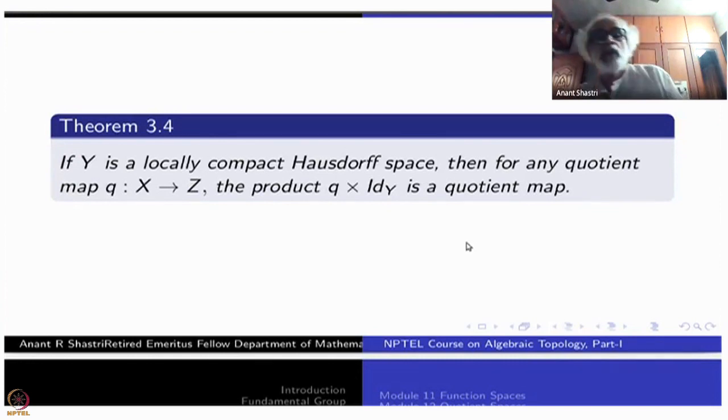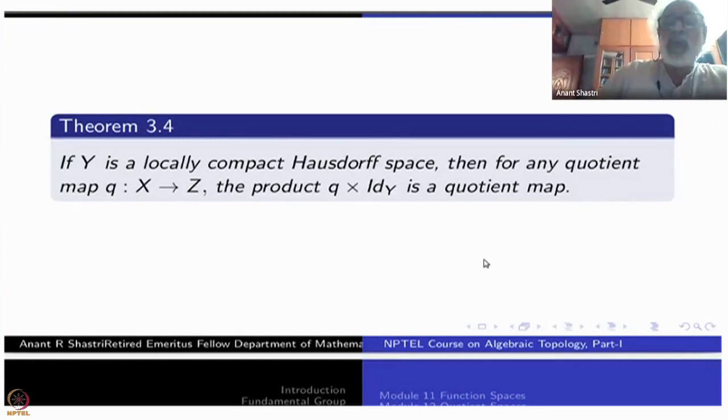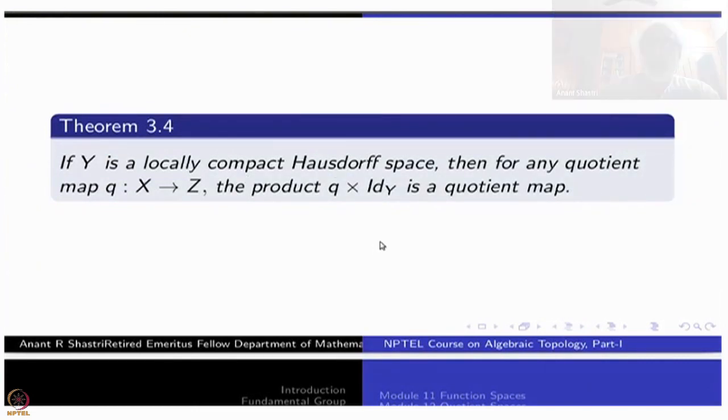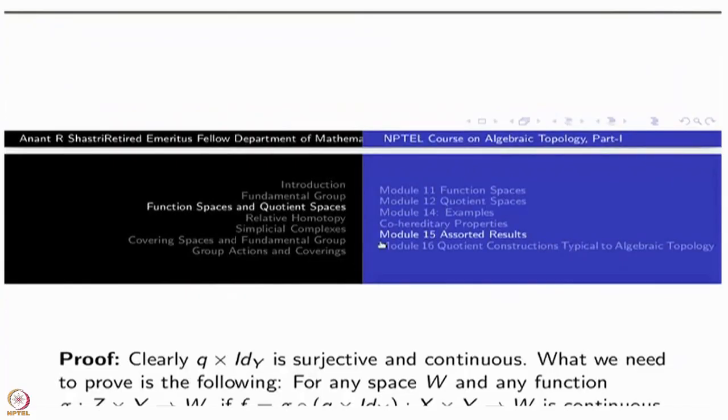This itself is not so difficult thing. The point is, why put such locally compact Hausdorff space condition and so on? Maybe easier and so on. The strange thing is, nothing else will work. As soon as Y is not locally compact Hausdorff space, there will be some quotient here such that the product is not quotient. Product identity is not quotient. So that is the beauty of this hypothesis. In some sense, it is a full answer also.